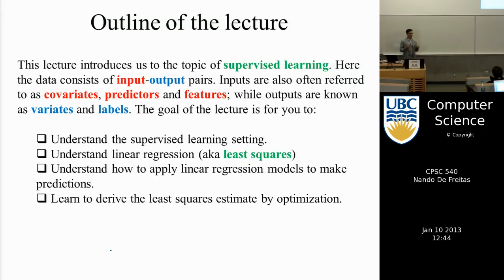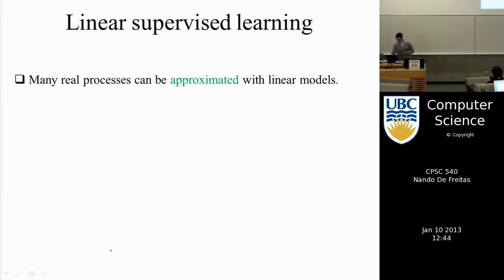We're going to derive least squares using the optimization approach. In that process I'll also introduce the notation we'll use throughout this course — essentially matrices and vectors, which is what we use to code. Linear models by themselves are still quite useful because a lot of real processes can be approximated with linear models.